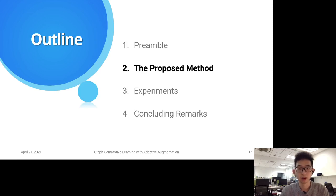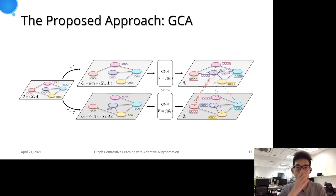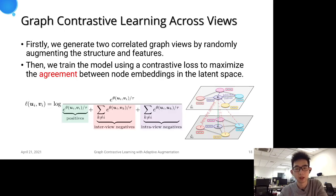Let's introduce our proposed method. The proposed GCA mainly consists of two stages: data augmentation and contrastive learning. At first,